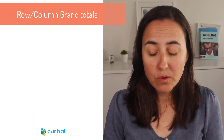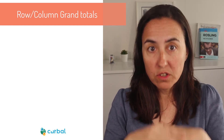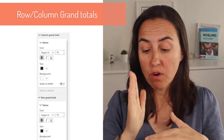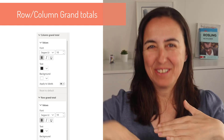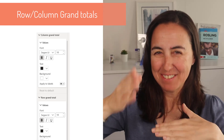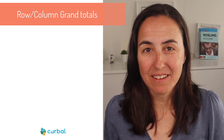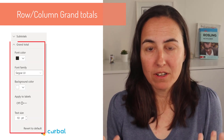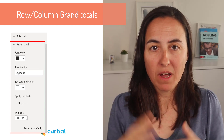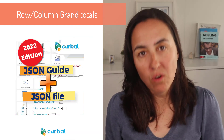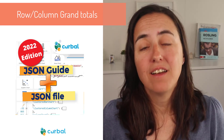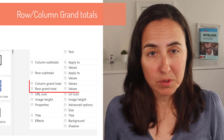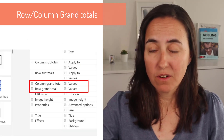They've now also added the possibility to format the row grand totals and the column grand totals separately. Before, we had just one grand total; now we have row and column. I have also made the changes on the JSON guide, so it's up to date — if you purchased it, go download it.